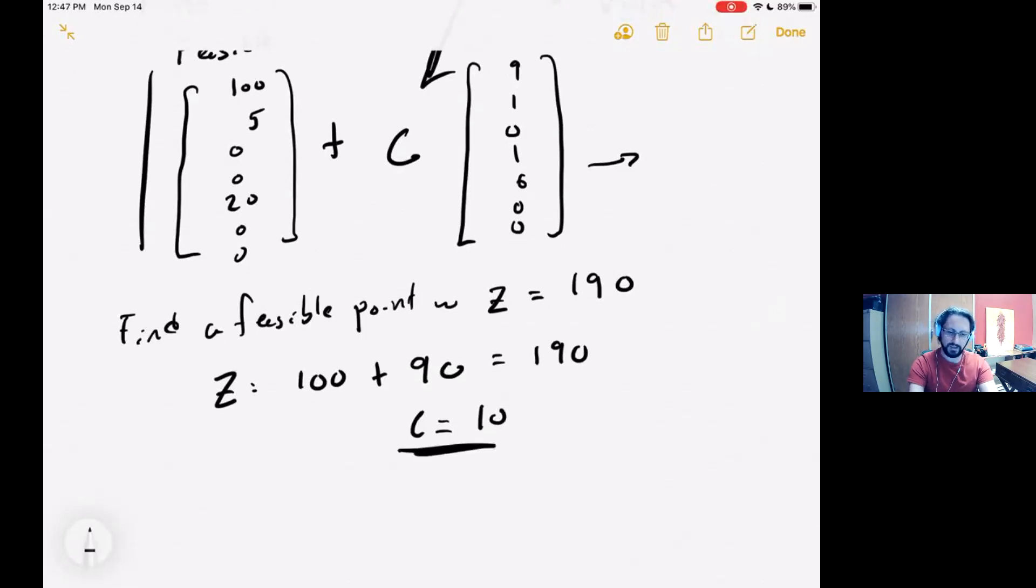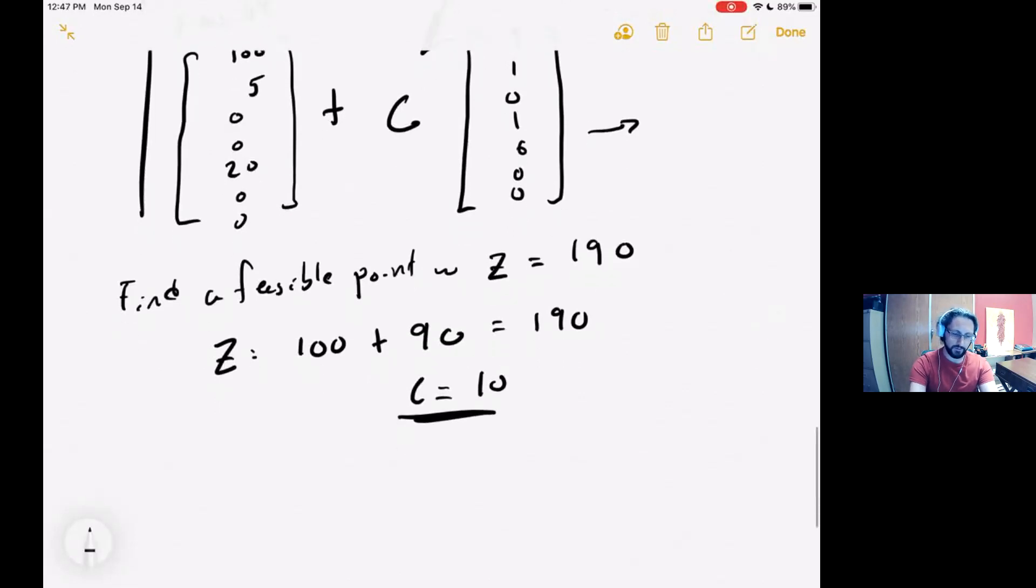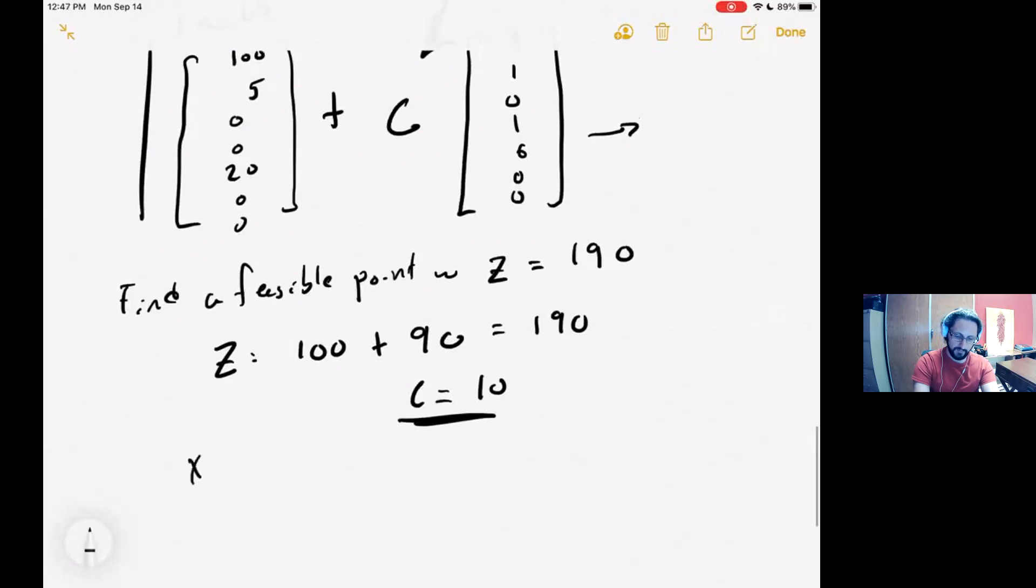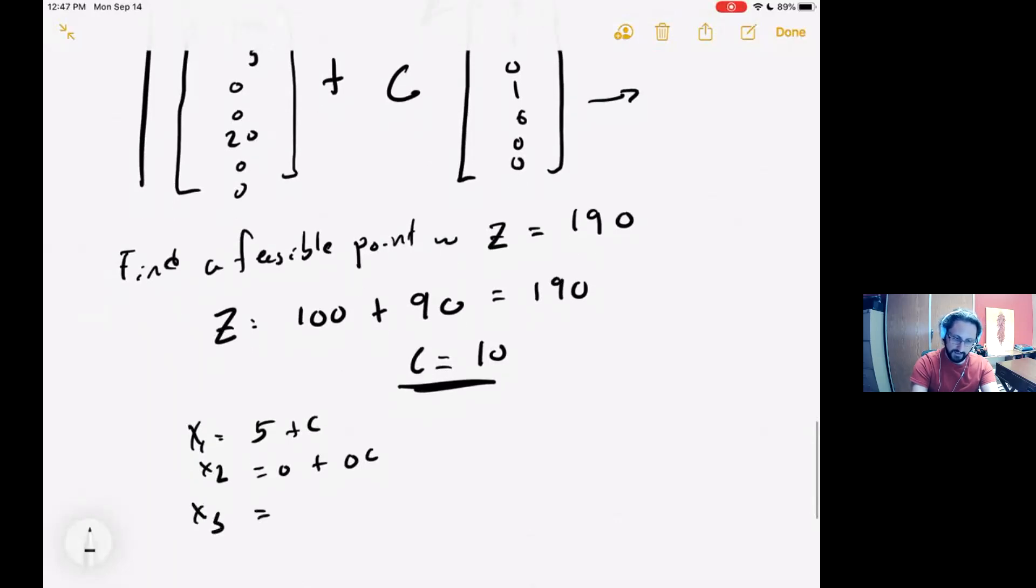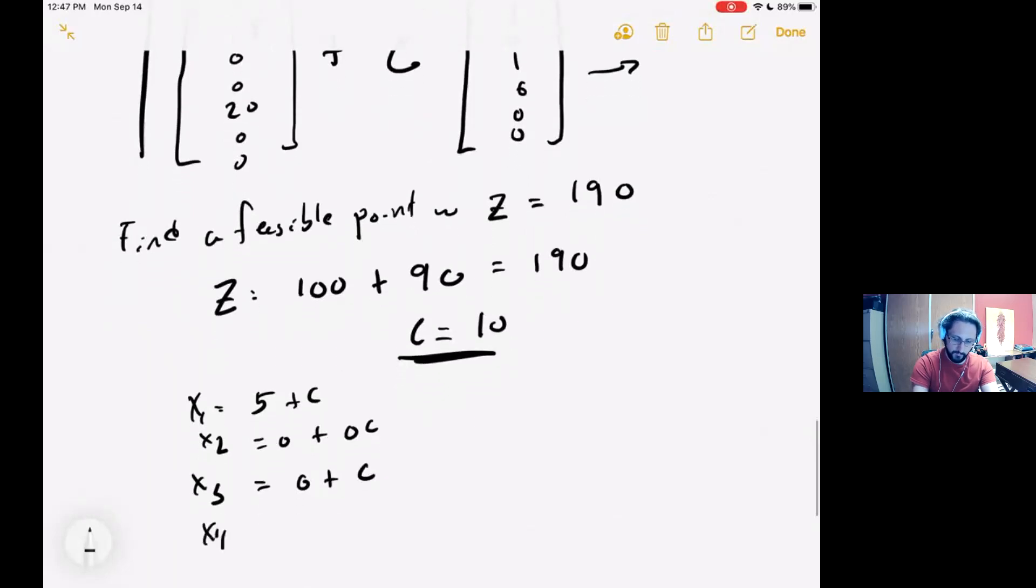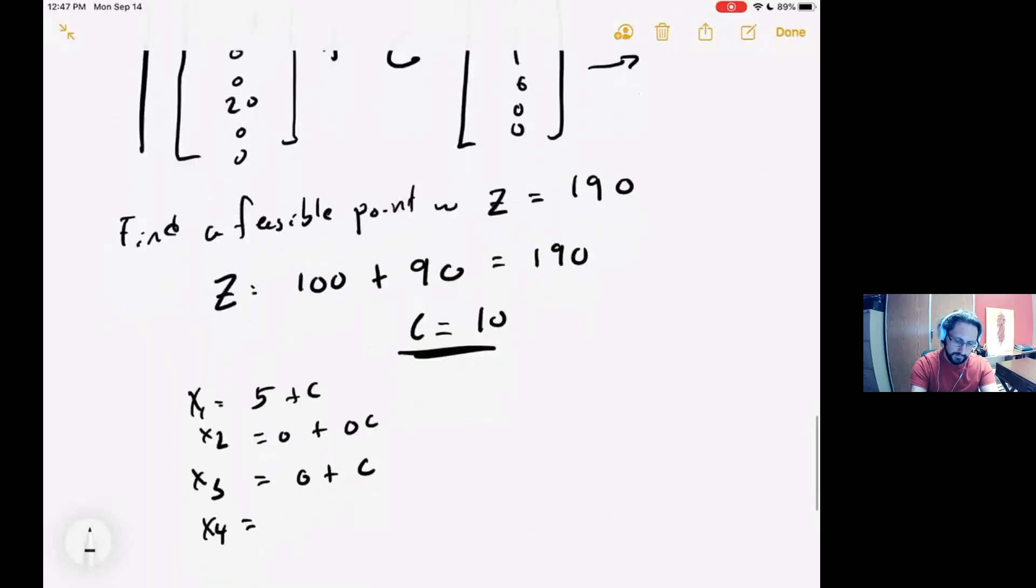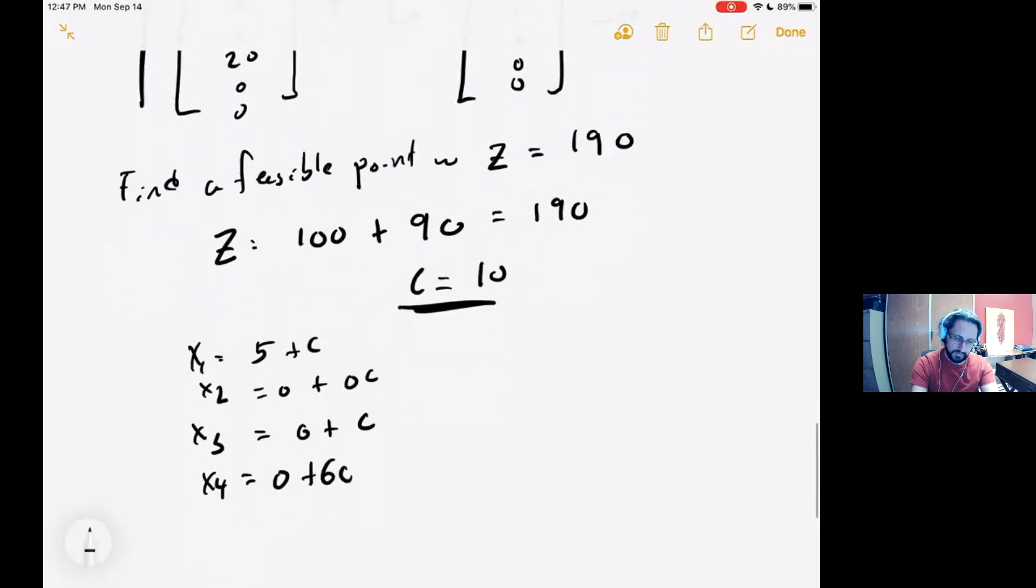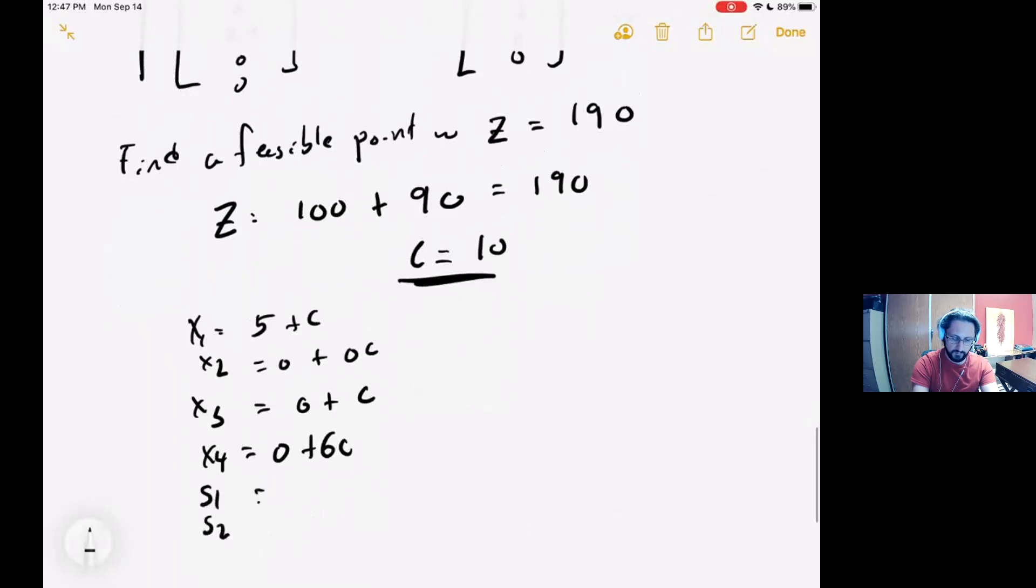Now that I know C equals 10, I can use this on the unbounded direction equation that I have to generate all of the other values. So for example, I have X1 as 5 plus C, I have X2 as 0 plus 0C, I have X3 as 0 plus C, I have X4 as 0 plus 6C, and then I have S1 and S2 both as 0 plus 0C.